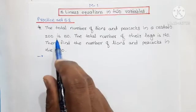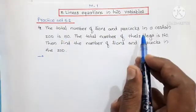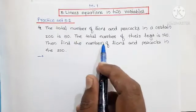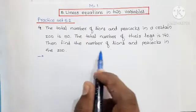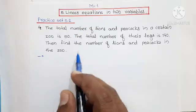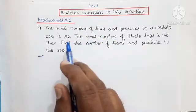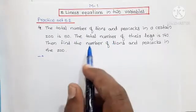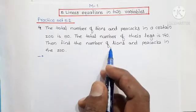The fourth example is: the total number of lions and peacocks in a certain zoo is 50. The total number of their legs is 140. Find the number of lions and peacocks in the zoo. Here two conditions are given — the total number of lions and peacocks is 50, and the total number of their legs is 140.